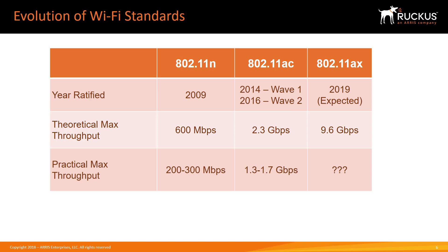With 802.11ac, the access point is now capable of up to 2.3 gigabits per second, though the practical limit is a little less. Most 802.11ac APs come with either two 1 gigabit ports, or some with 2.5 gig ports.